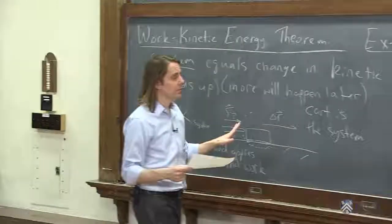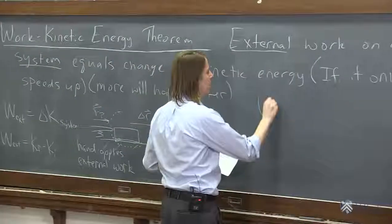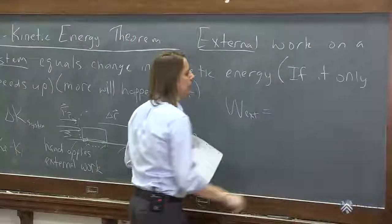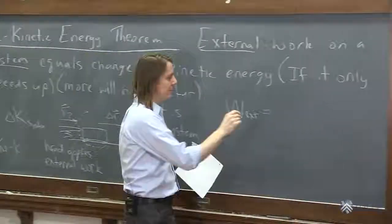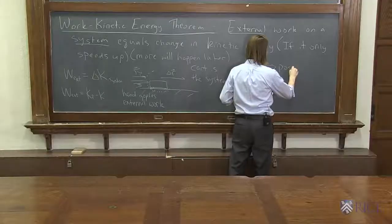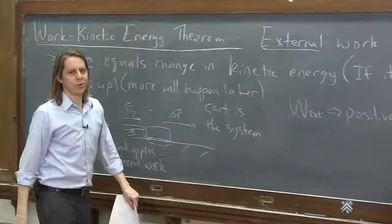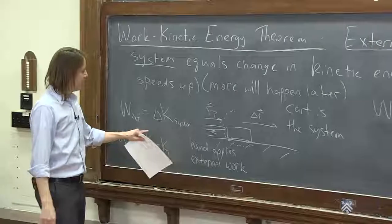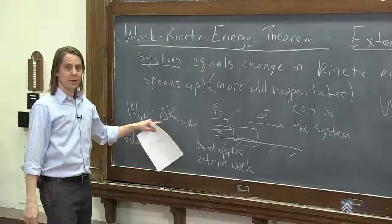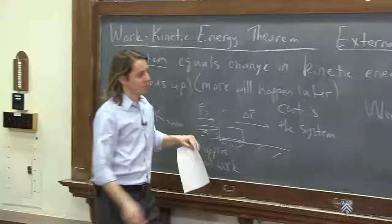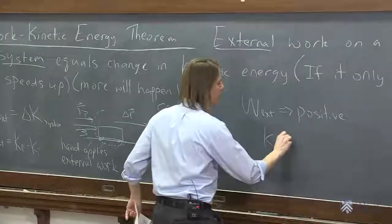So now let's check our signs. Let's see, the external work, was it positive, negative, it was positive. In addition to the external work being positive, we can now look over here and say delta K of the cart should be positive. So K should have increased.